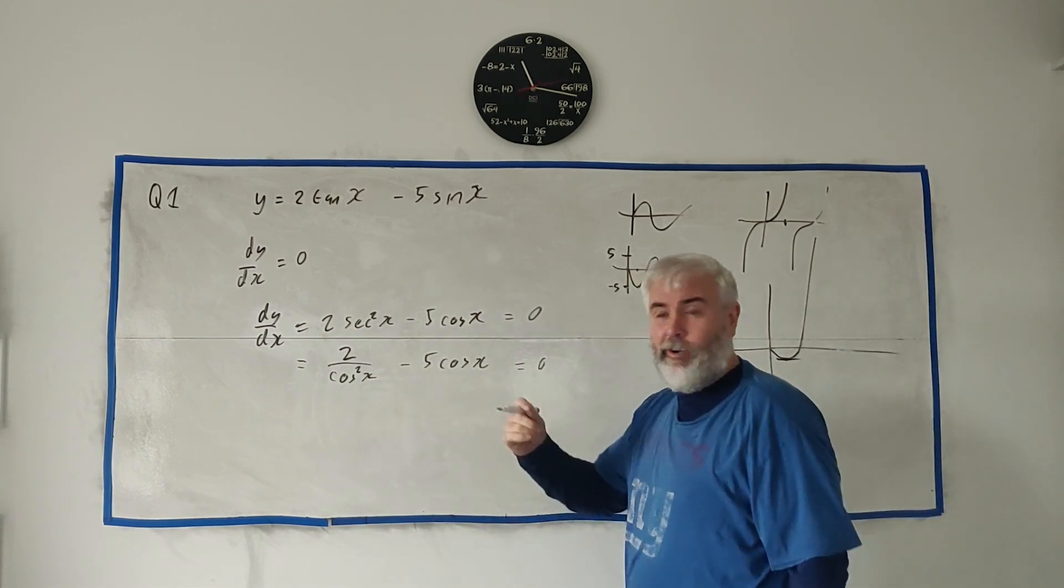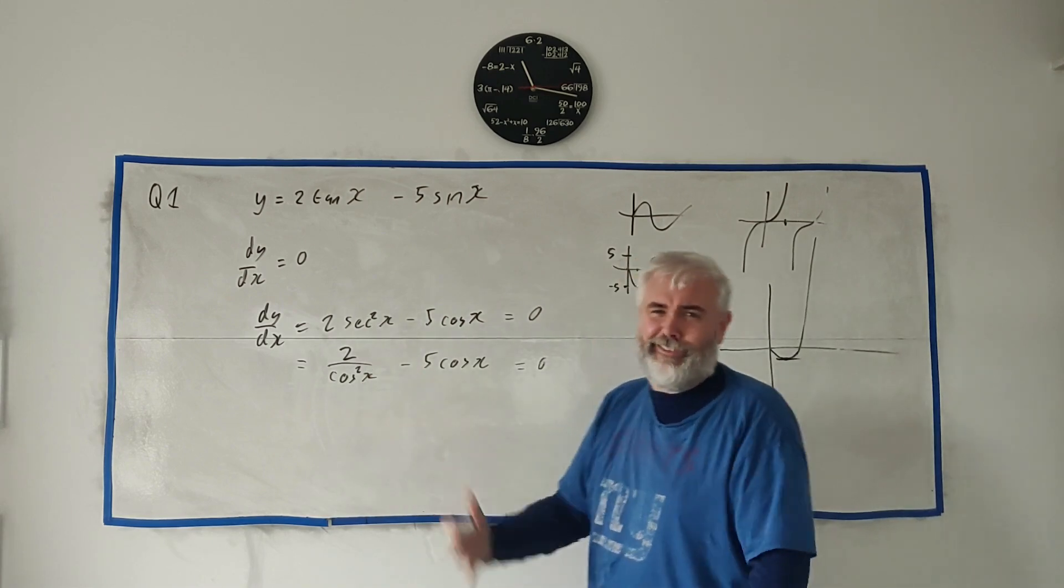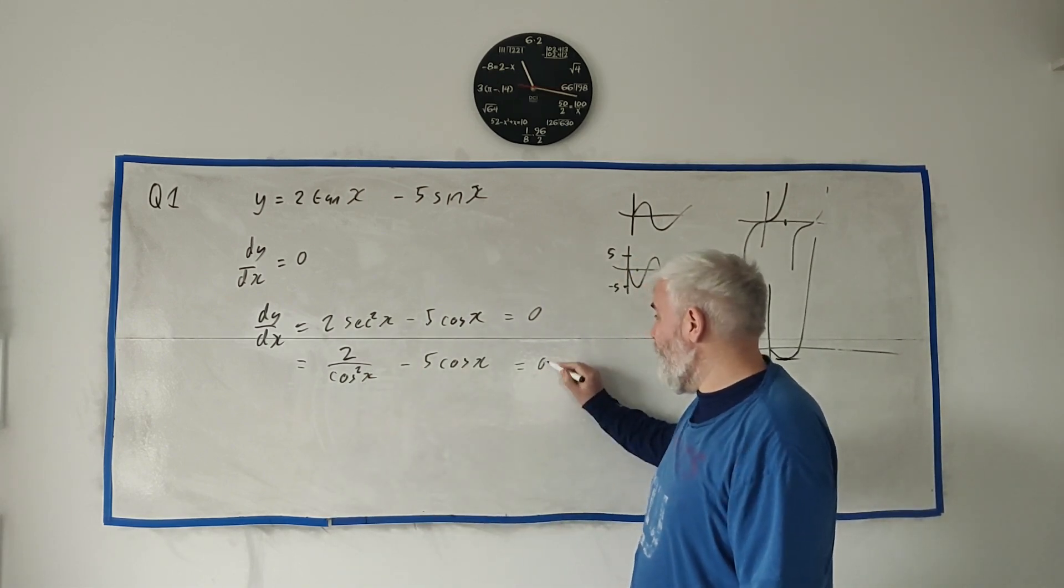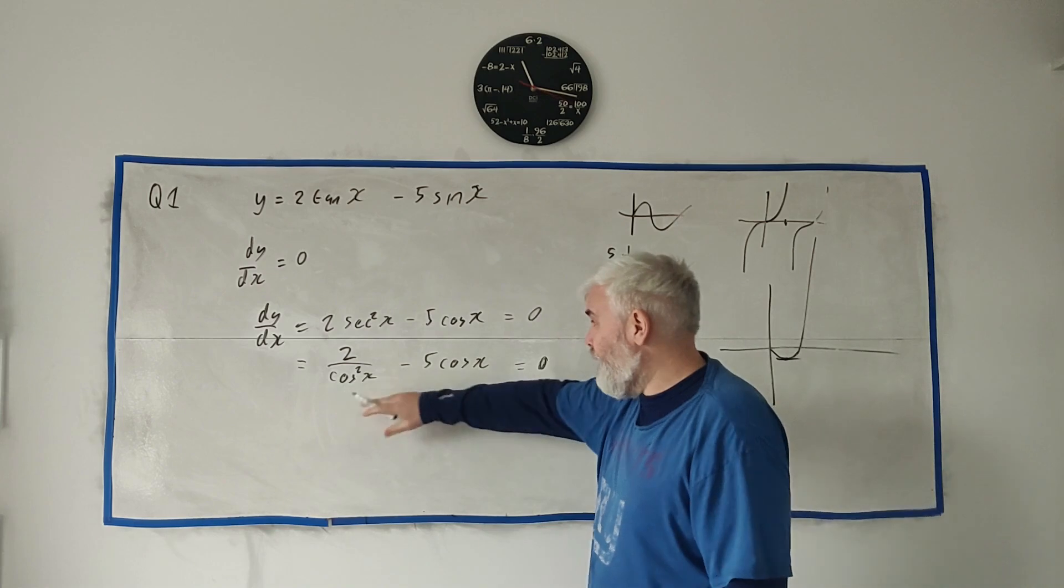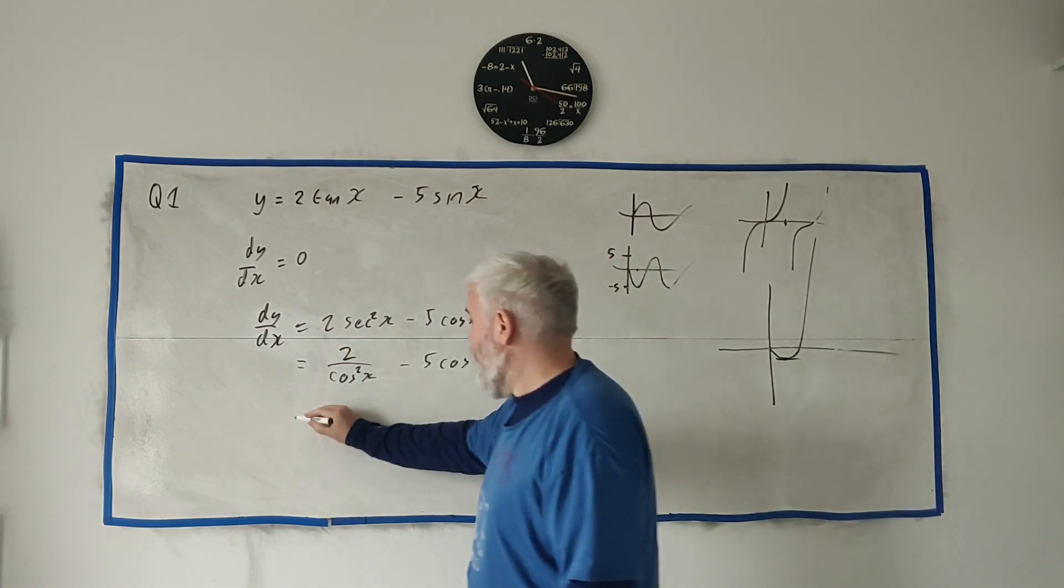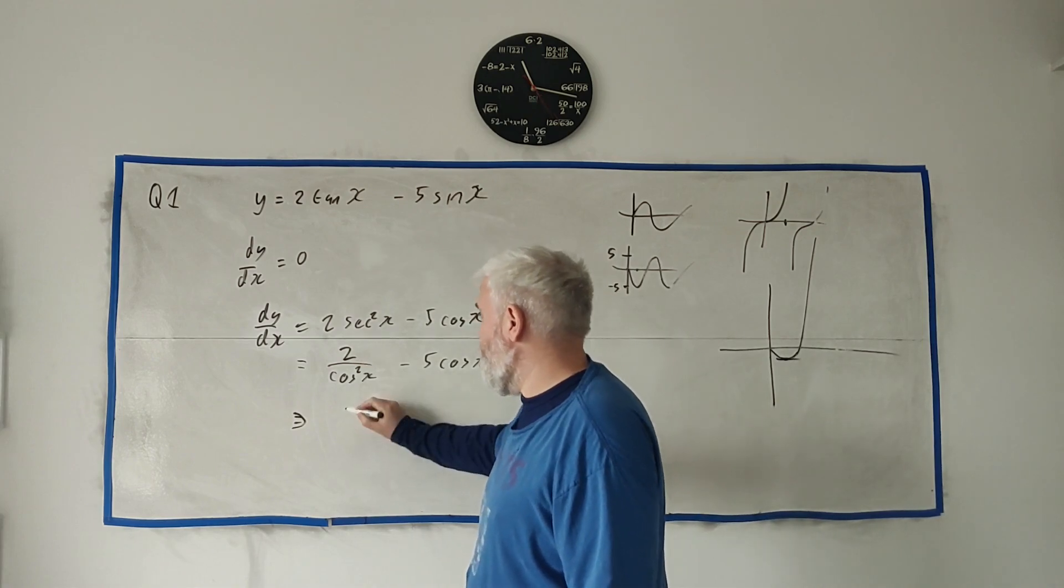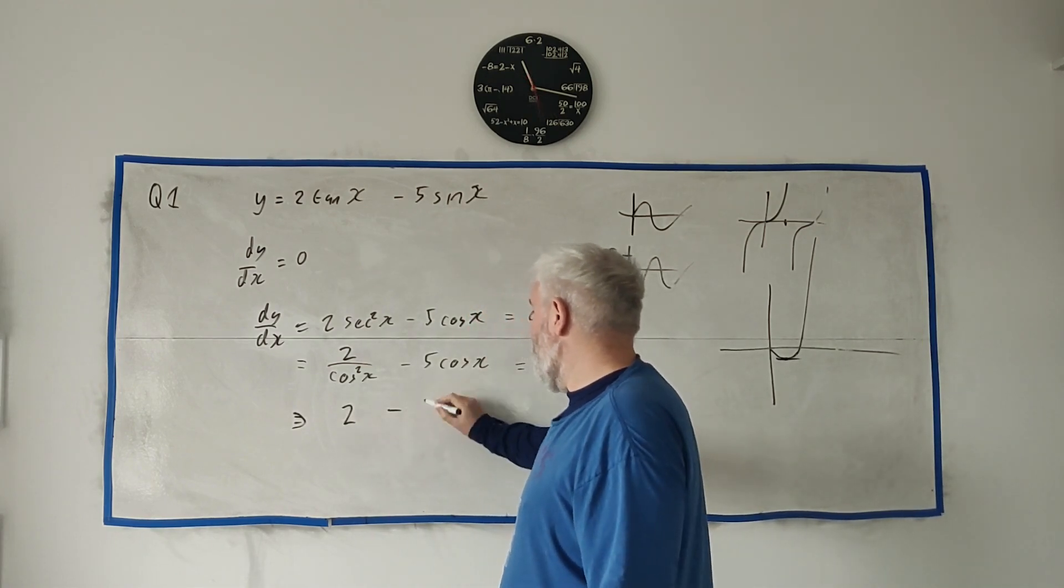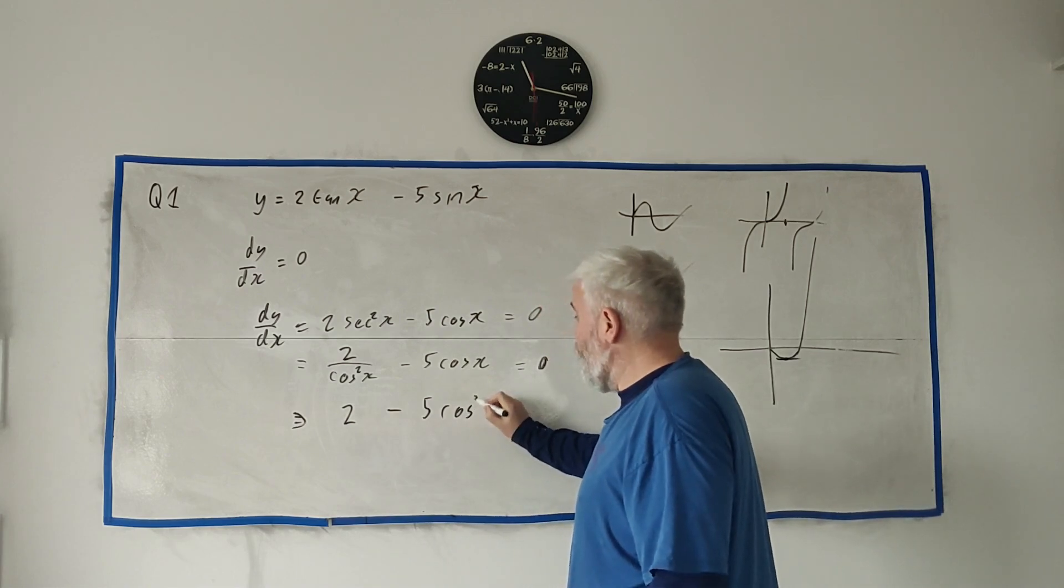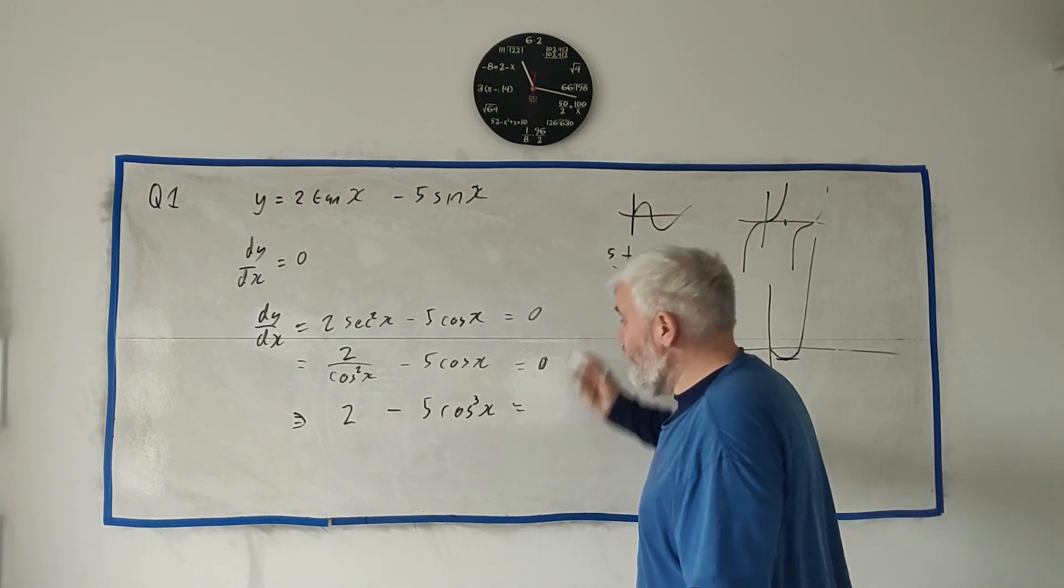The first thing I usually like to do with equations is get rid of these denominators—these bottom rows, they're awkward to deal with. Great thing about having a zero here is we can just multiply everyone by cosine squared, and this becomes—this multiplied by cosine squared is just 2, and this multiplied by cosine squared is cosine cubed, and zero multiplied by cosine squared is just zero. That's the handy thing about it.